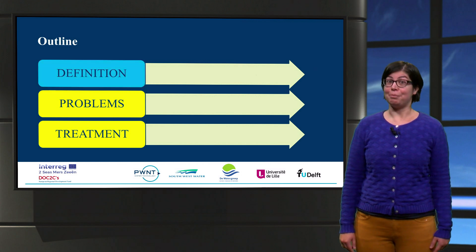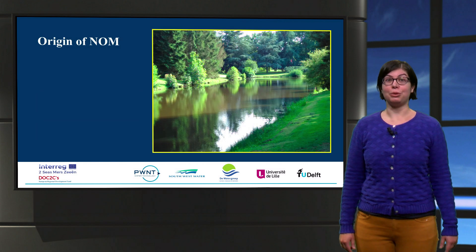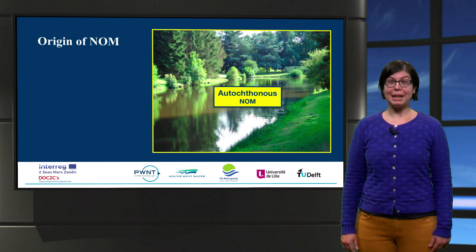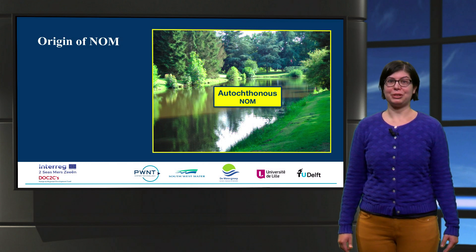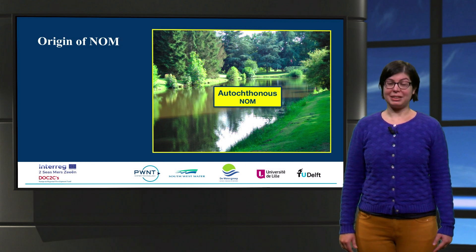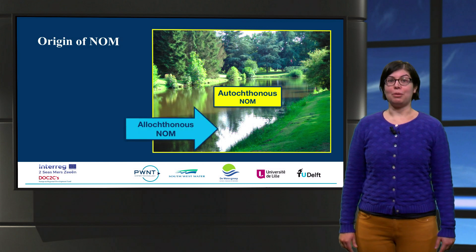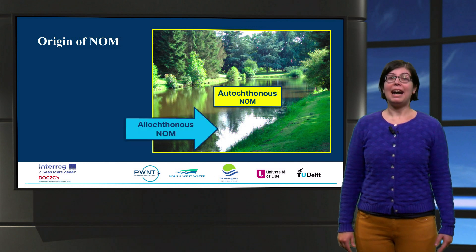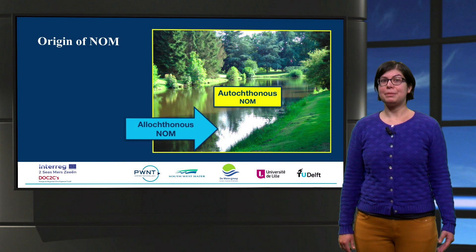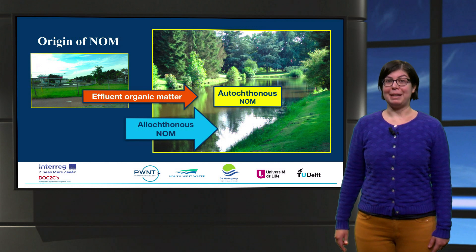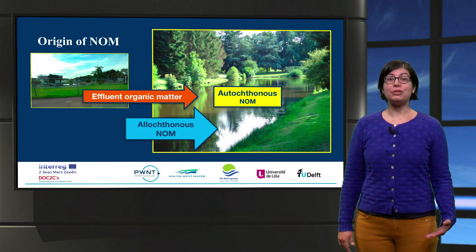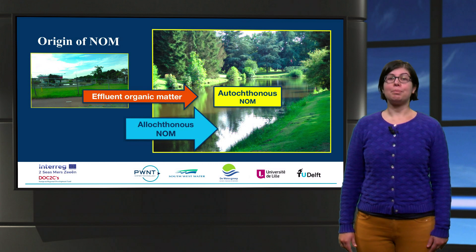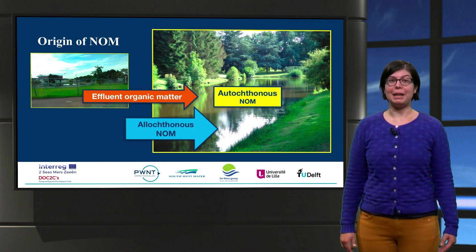But let's define NOM. We need to know why NOM is present in the water sources. Autochthonous NOM is produced inside the water source by, for instance, algae activity. Allochthonous NOM comes from outside. Hydrological and geological mechanisms allow allochthonous NOM to reach the water source. Effluent organic matter is the NOM that is not removed by wastewater treatment and it is mostly composed by soluble microbial components.